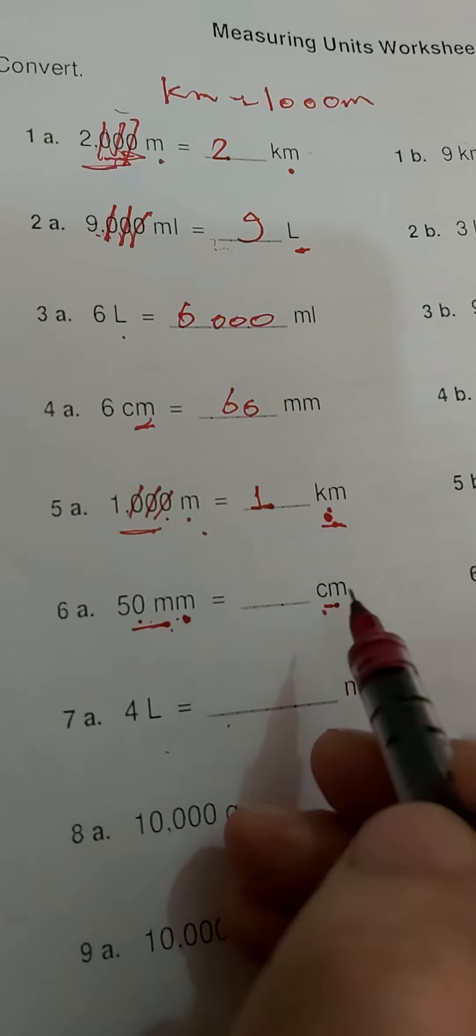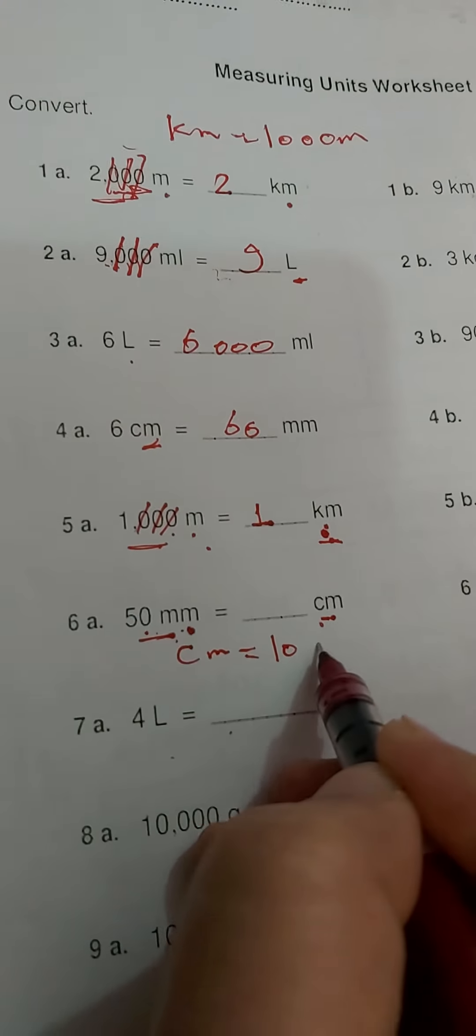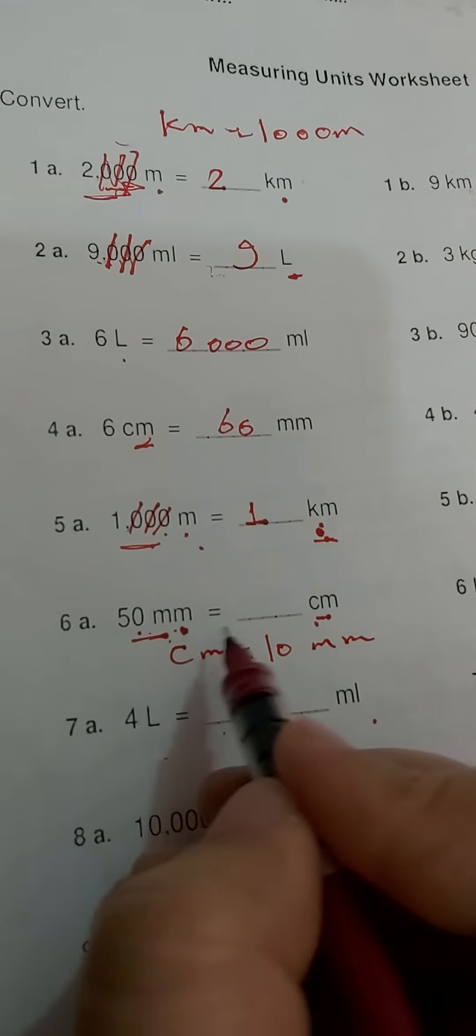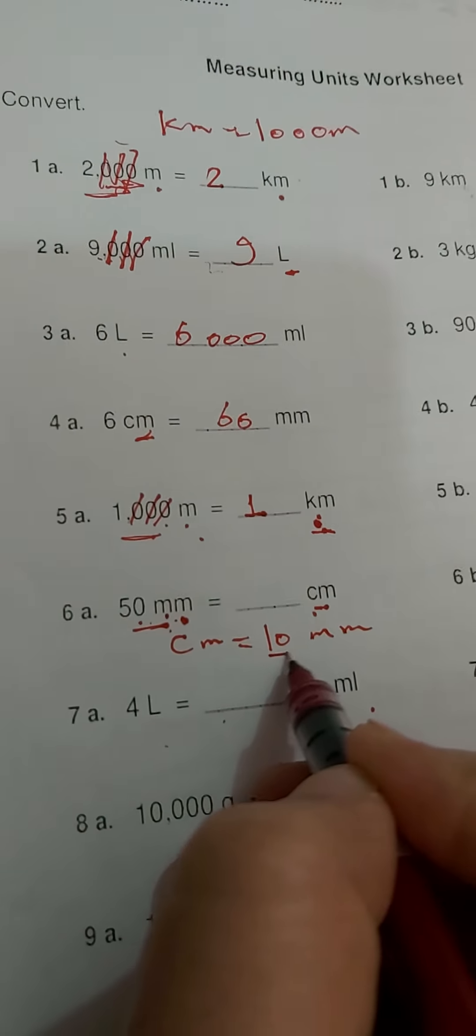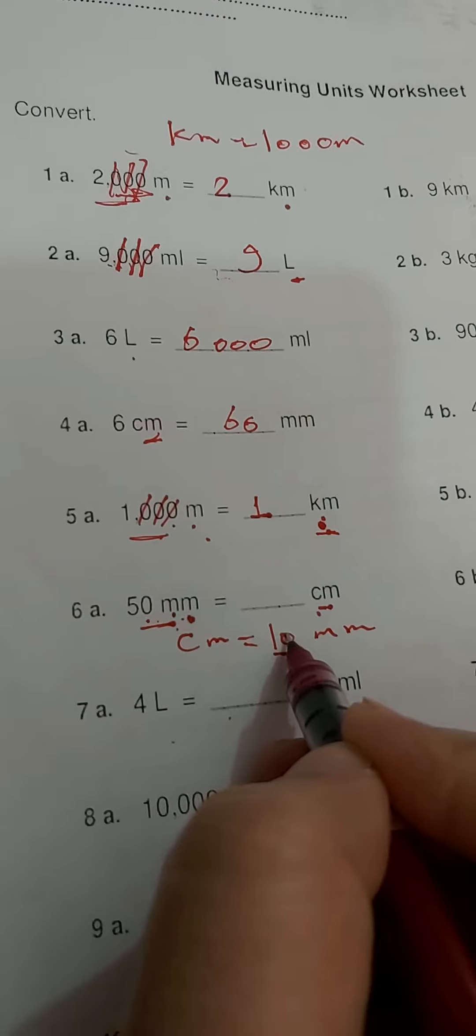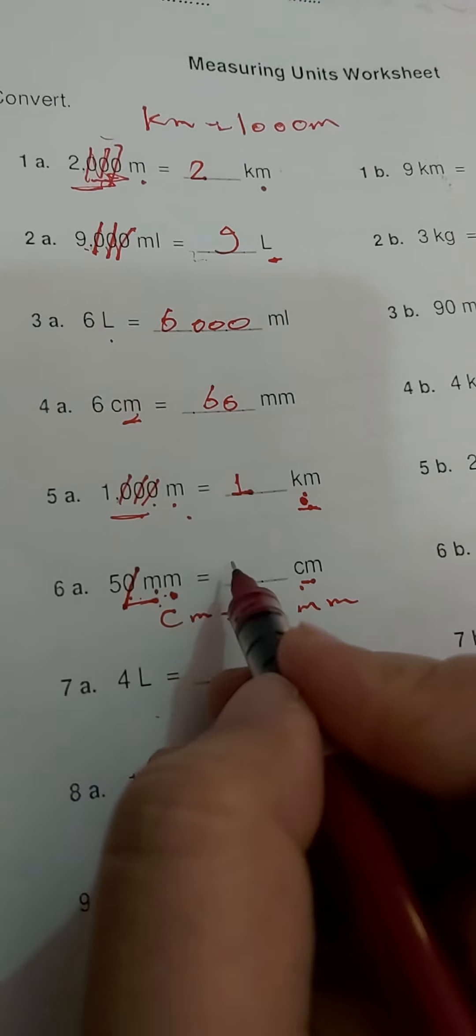What about this? 50 millimeters to centimeters. I have a centimeter equal to 10 millimeters, so from small unit to the big unit, I will remove how many zeros? I will remove one zero.